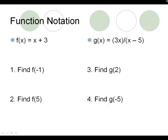So when it says f of x equals x plus 3, that's the same thing as having y equals x plus 3. g of x equals 3x over x minus 5 is the same thing as y equals 3x over x minus 5. Putting an f of x or g of x on it is just like calling them a name, like calling them Frank or calling them George, instead of calling them y equals.